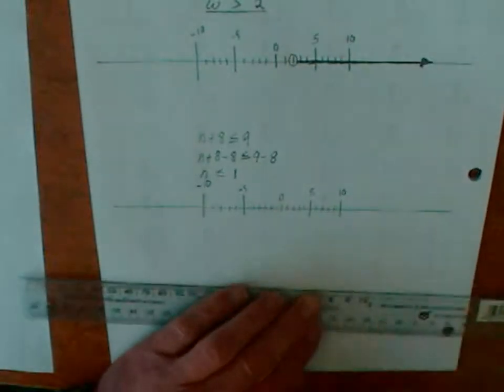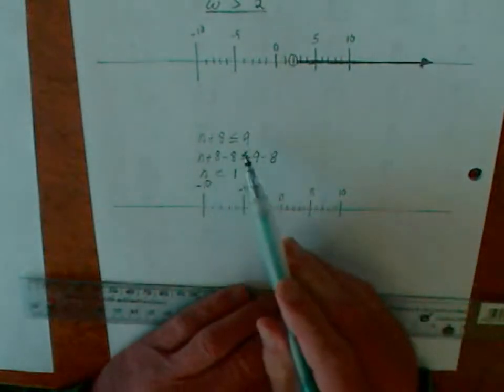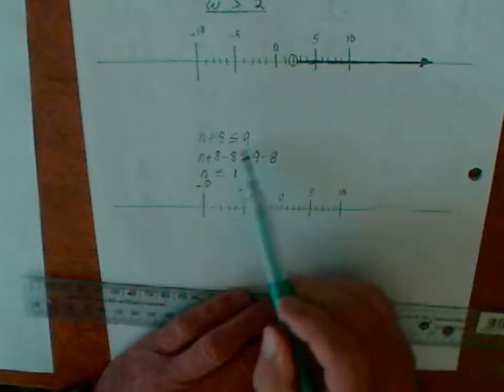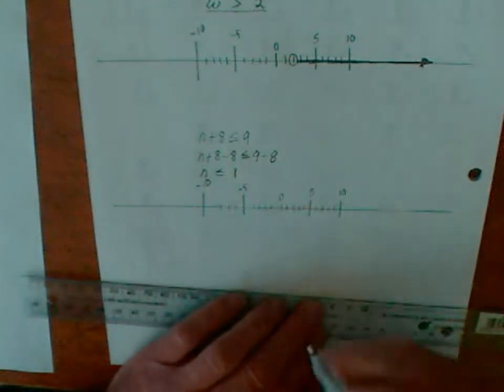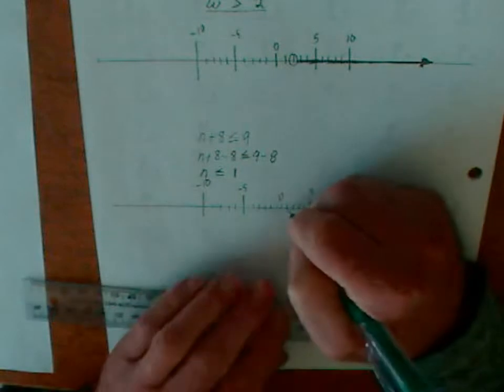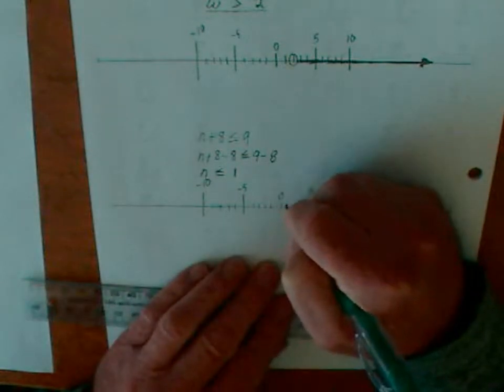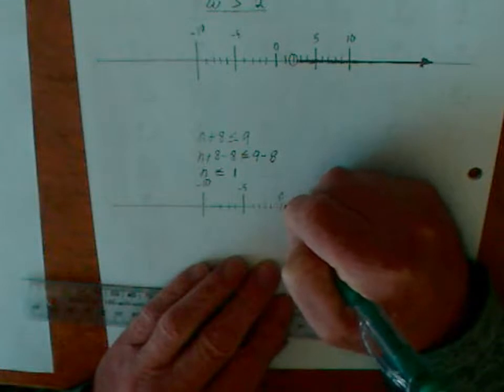The next example is n plus 8 is less than or equal to 9. So we solve the inequality. n is less than or equal to 1. So we find 1 on our number line, and we have to do a closed in dot.